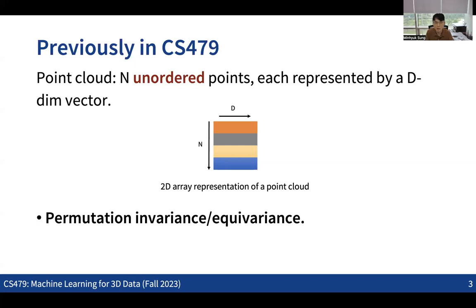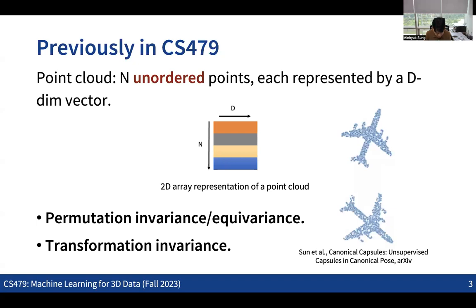When we change the order of points, the output should not be affected — the information for each point should not change depending on point ordering. How to guarantee this in the neural net pipeline was the main question we discussed. Another property we wanted to achieve was transformation invariance. These two properties were the main topics from last time.